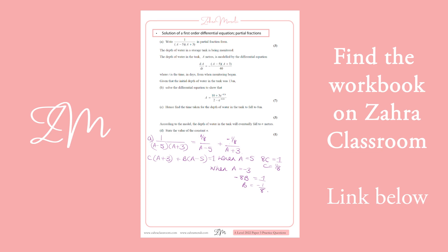The depth of water in the tank, a meters, is modeled by this differential equation where t is time in days from when monitoring began. When you see 'differential equation', your brain should go to separating variables — put all the a's on one side and all the t's on the other. So we get one over (a minus 5)(a plus 3) da equals one over 40 dt, each needing an integral sign.